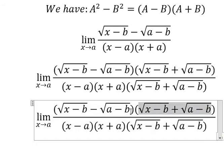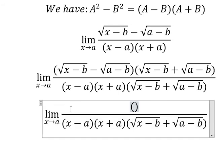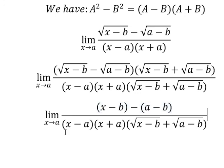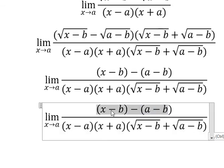So for this one, that is square root of x minus b minus square root of a minus b, we need to simplify and we have x minus a.